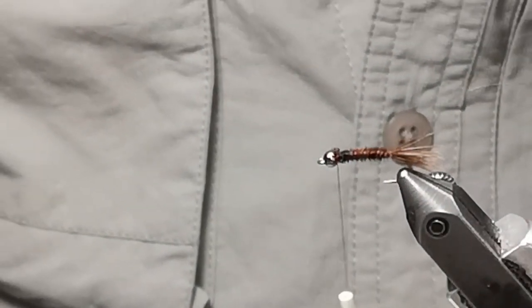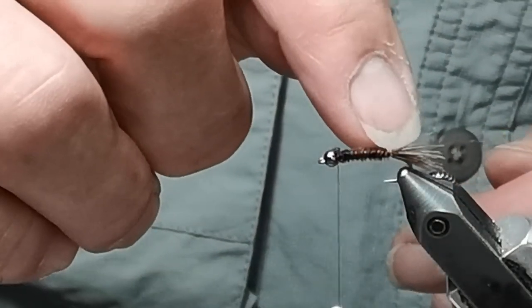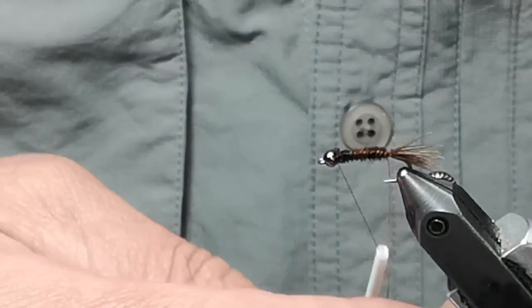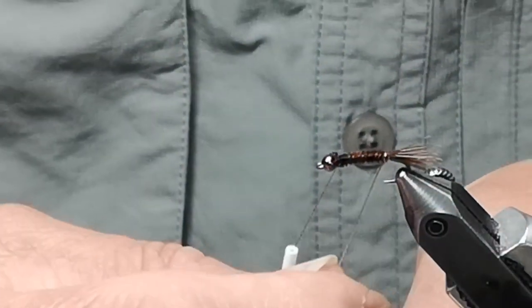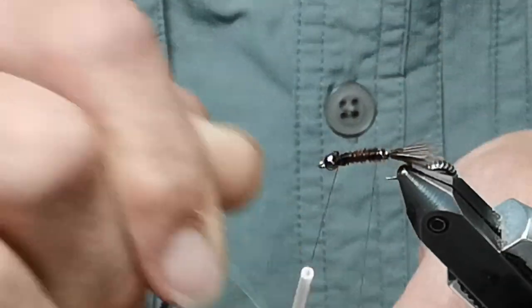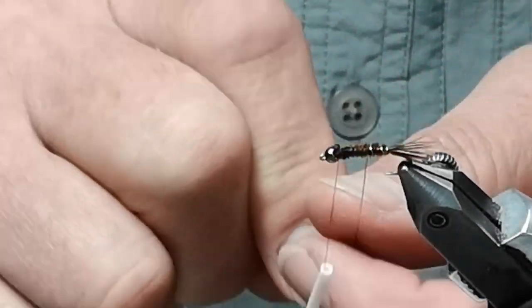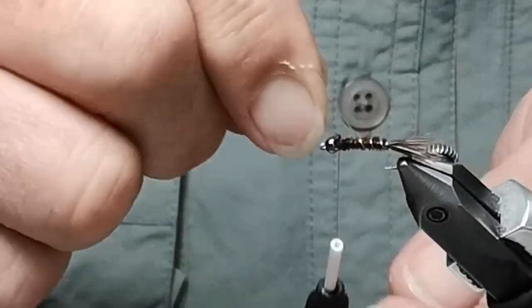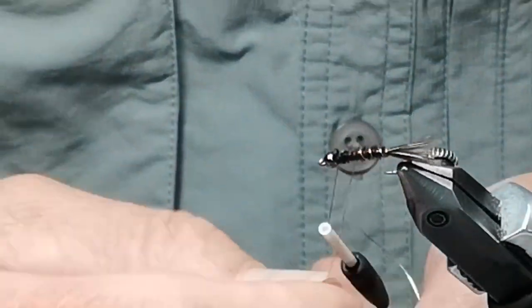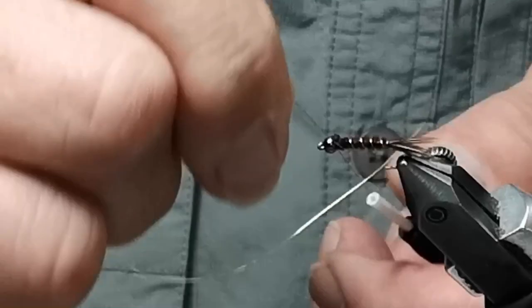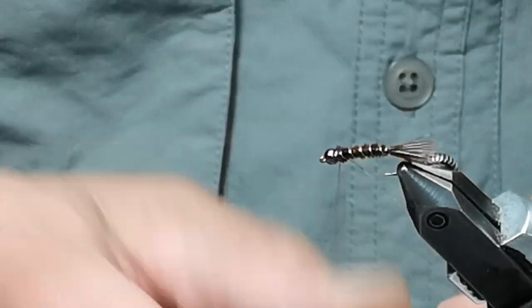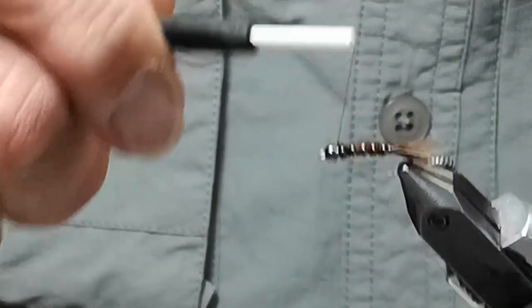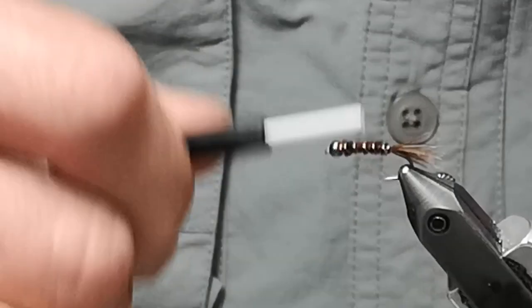I'm going to wrap the wire absolutely always backwards against the grain of the pheasant, and I'm going to go all the way up to the front. Again, I go once or twice around in front of the thread, then I can secure that wire down.